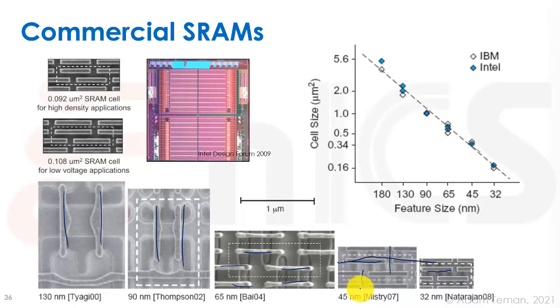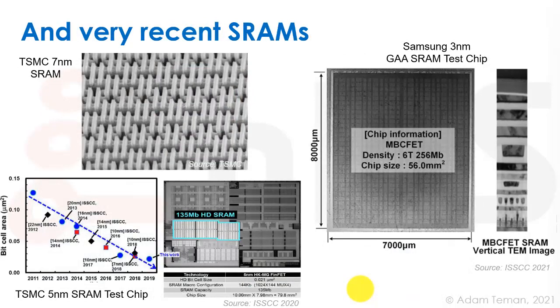So some very recent SRAMs that I was able to find - the foundries don't like to really show these things too much so you can only find some things in recent publications like ISSCC or IEDM. Here are some things I was able to find. Up here you see a seven nanometer SRAM from TSMC, and you see again this really nice structure. These of course are FinFET structures, but it's really very dense and nice.